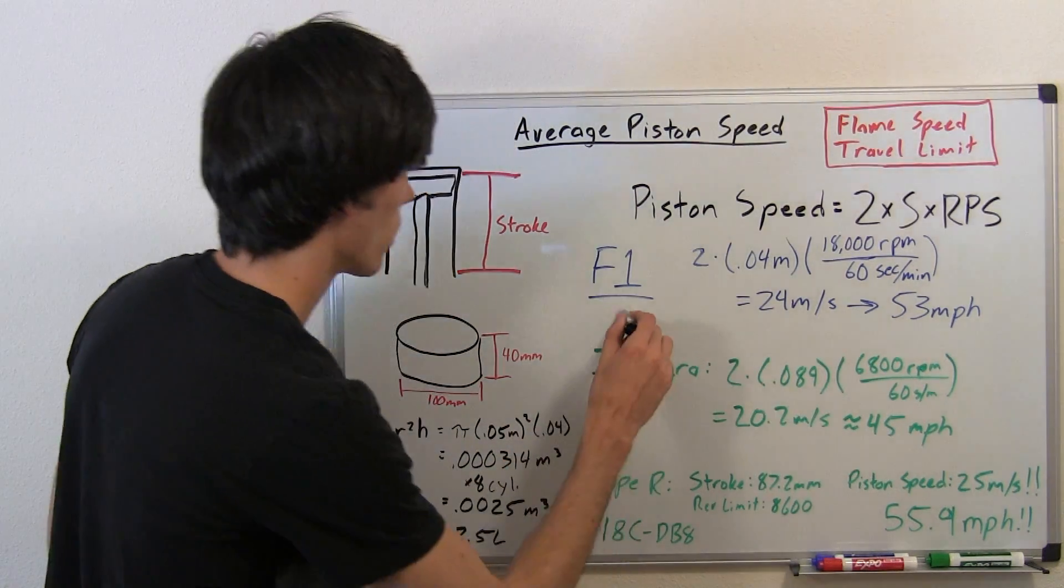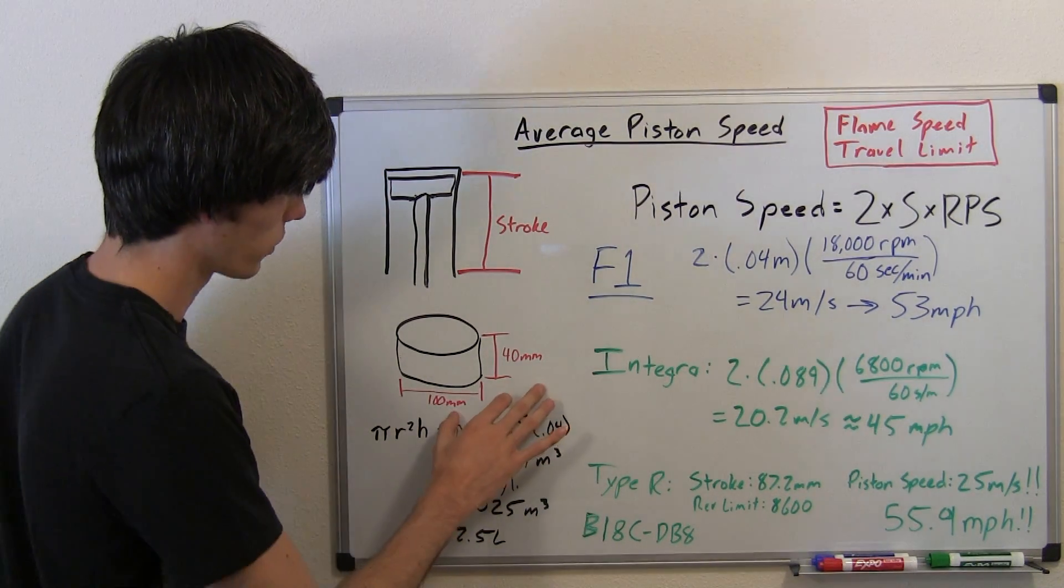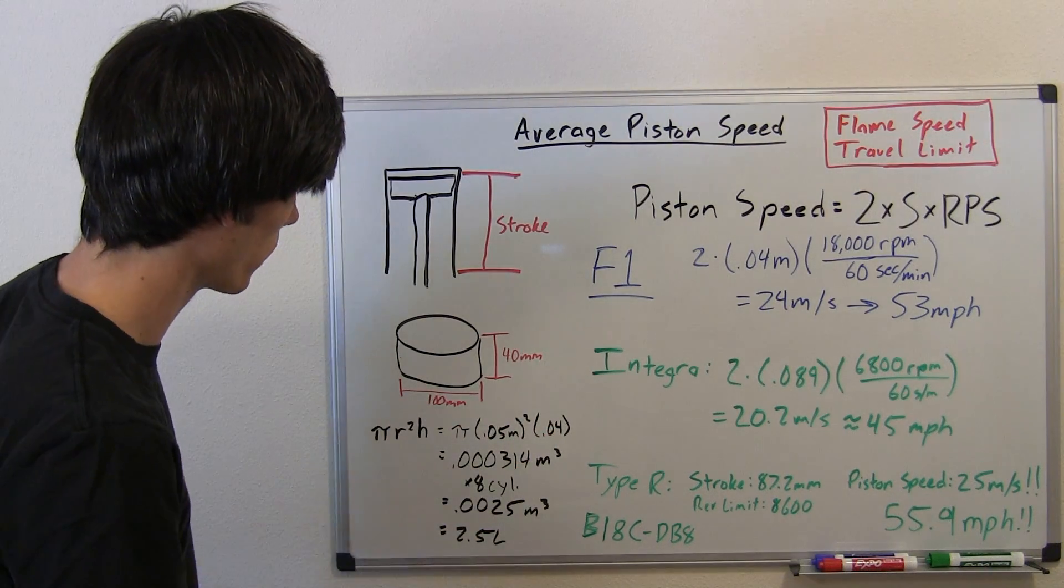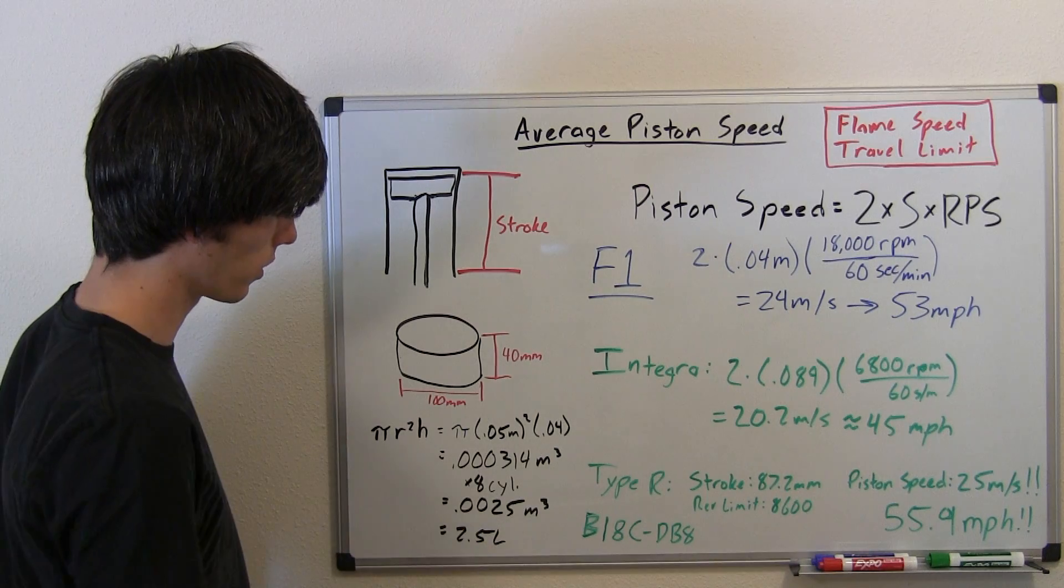For a Formula One car, here I just drew a cylinder and went with some dimensions for a typical Formula One engine. A 40 millimeter stroke and a 100 millimeter bore.